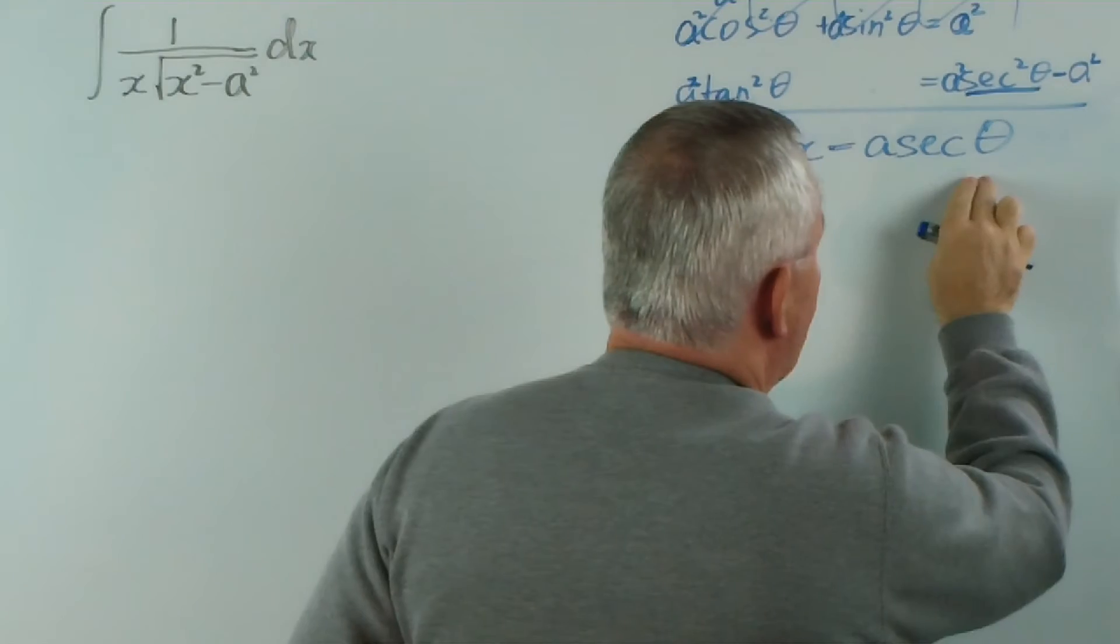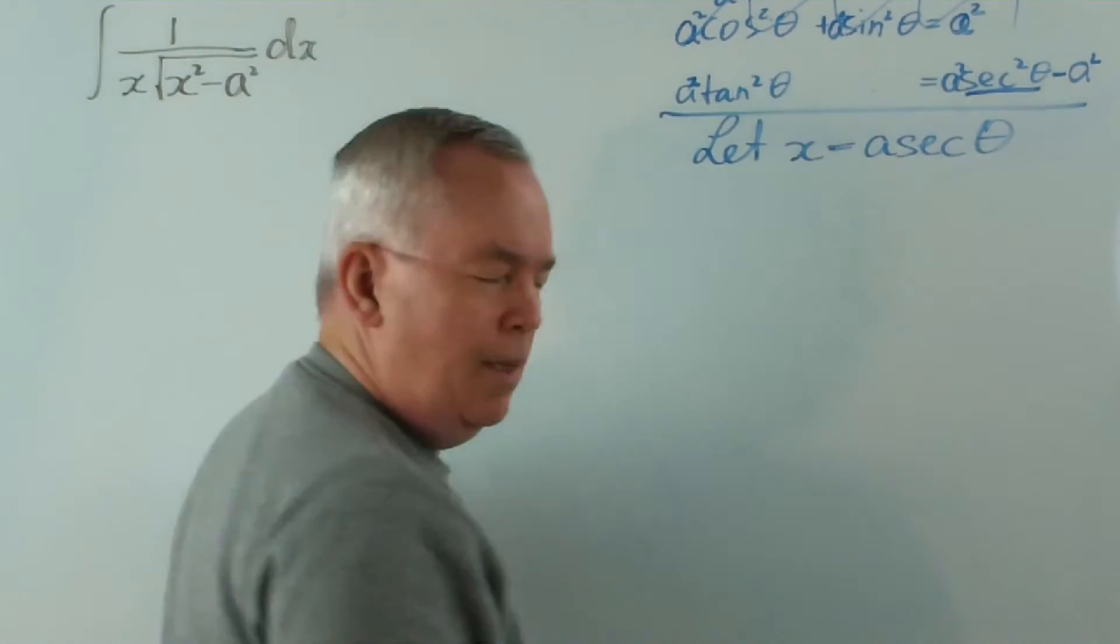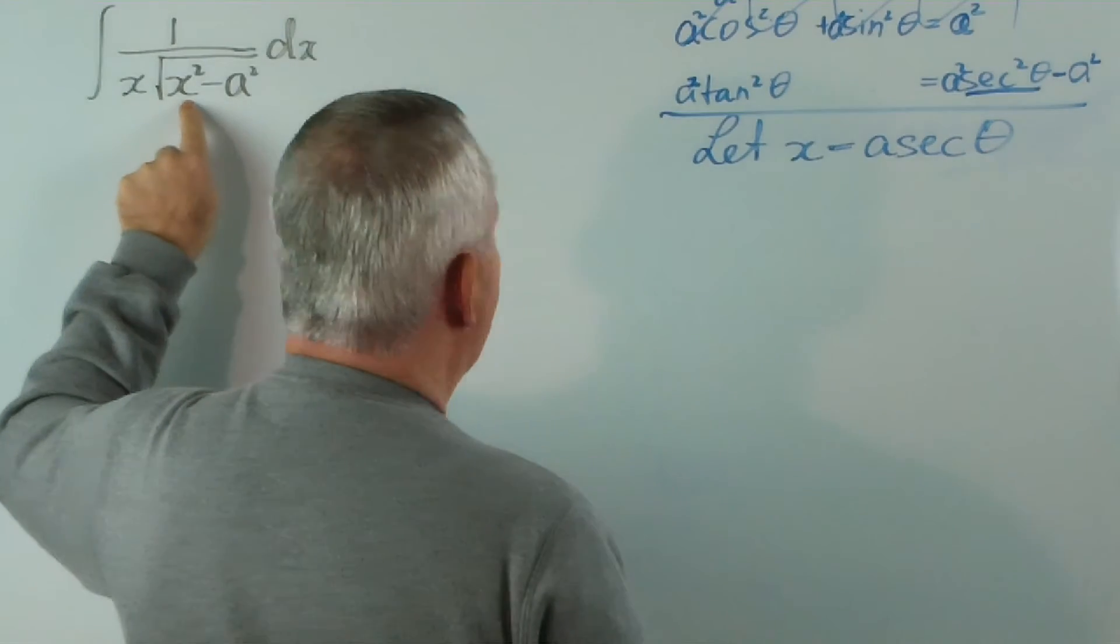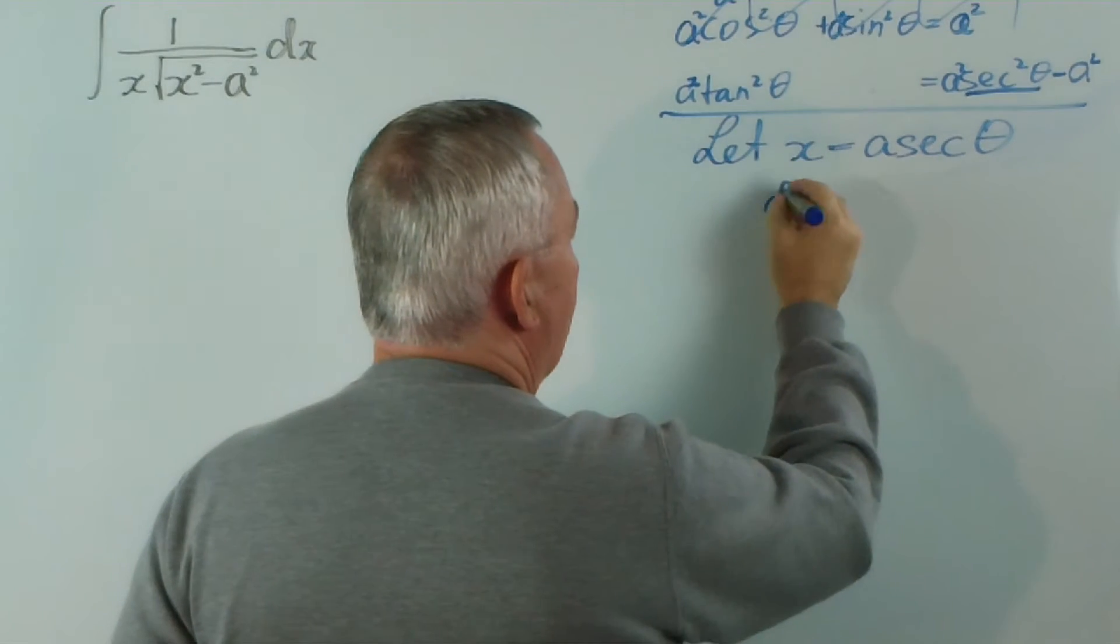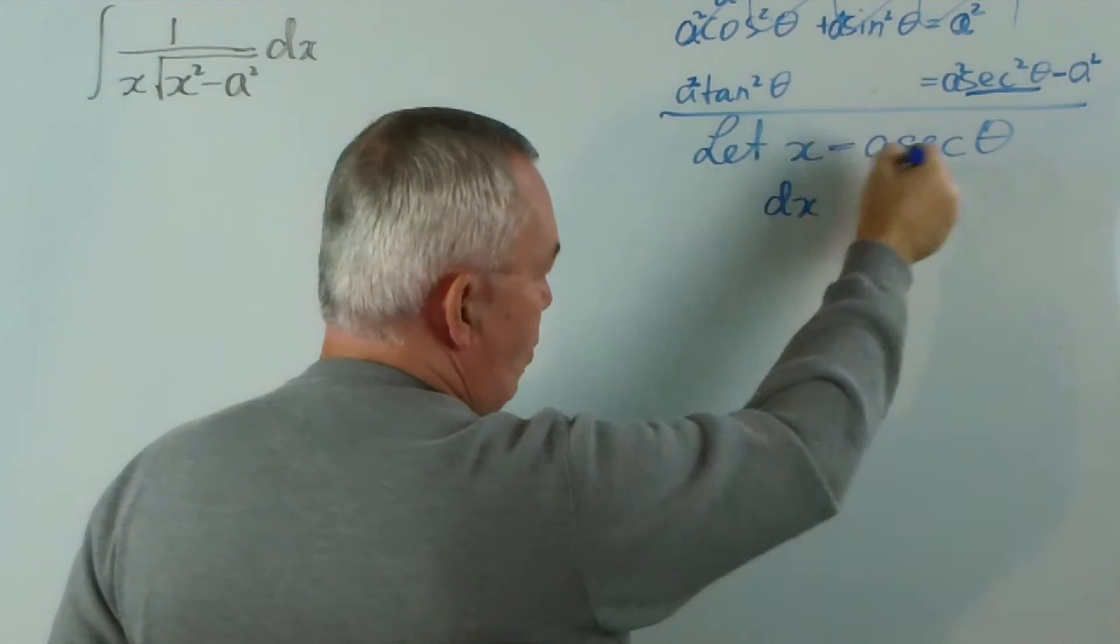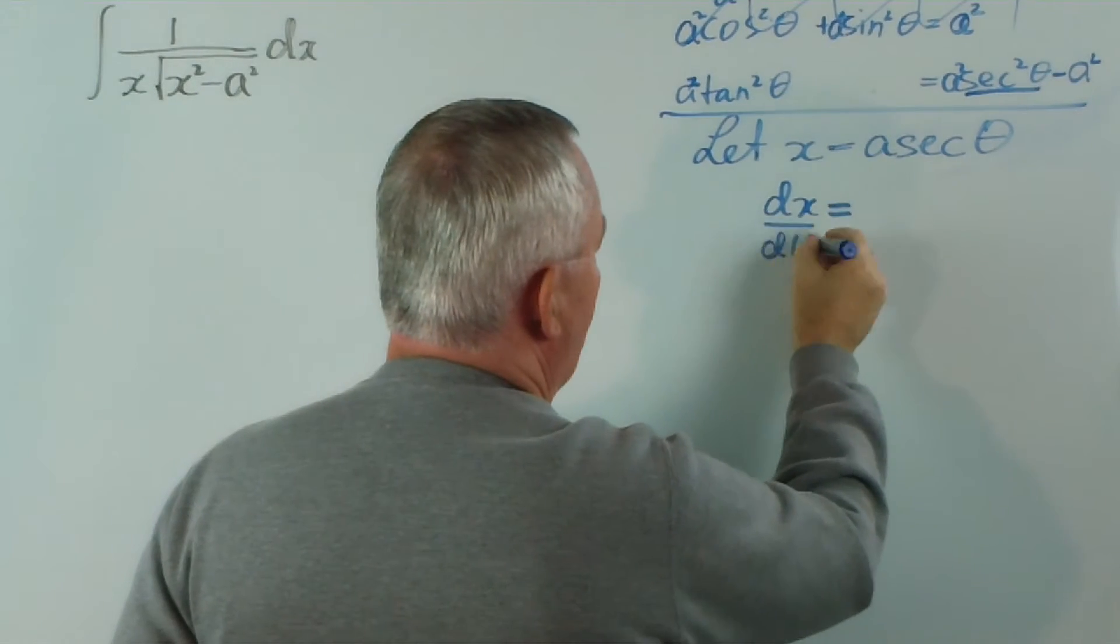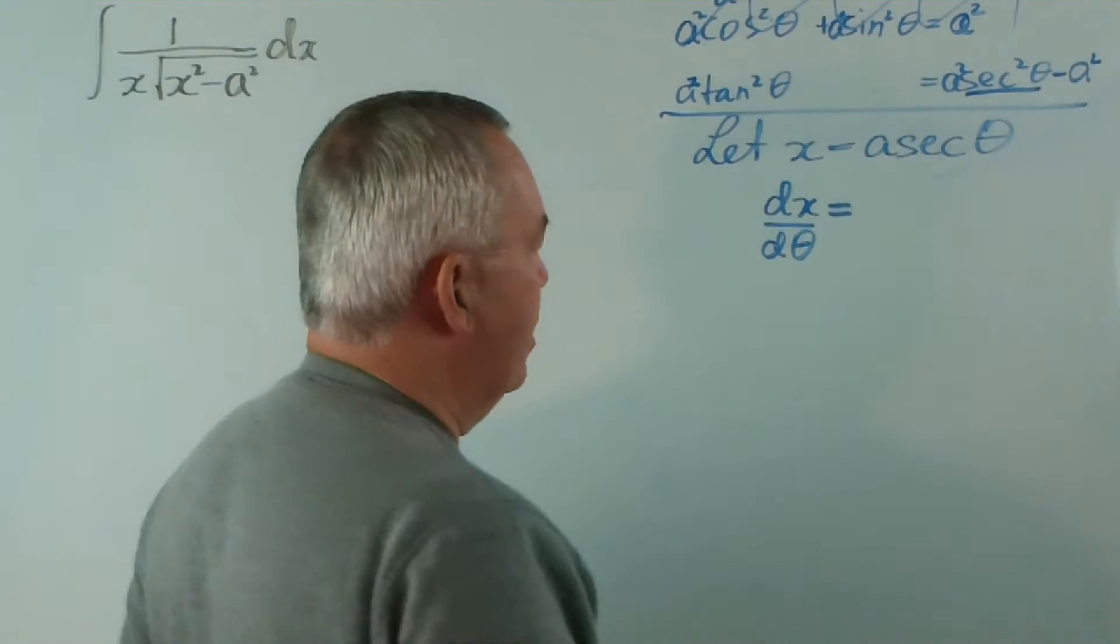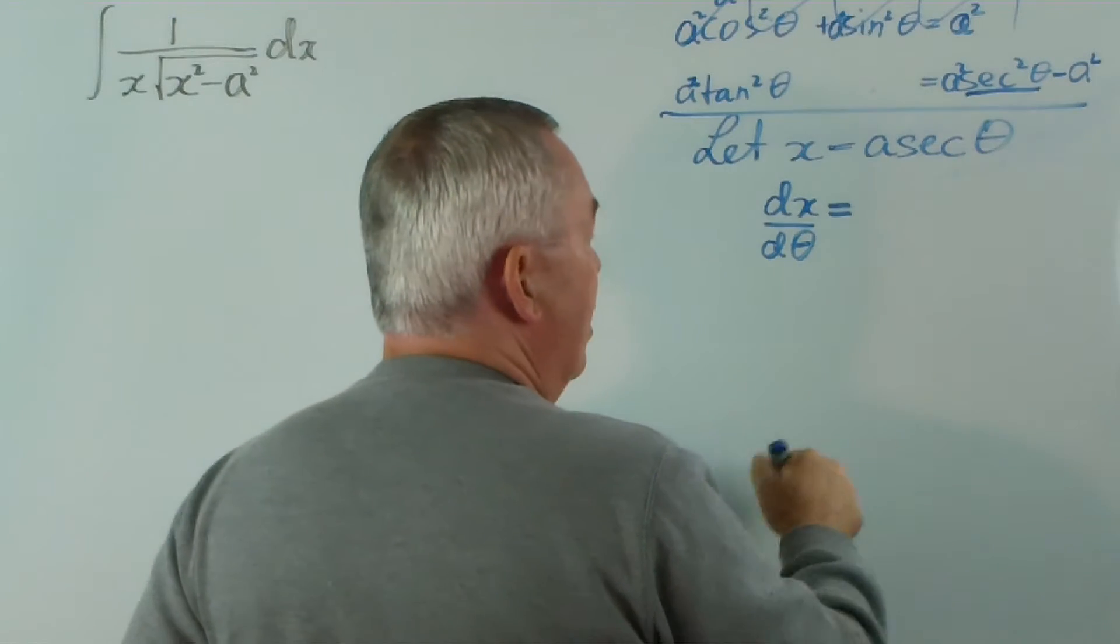Okay, we need to get down to it now. If we're making this substitution, then in place of this x we can write a sec theta. That's not a problem. In place of this x we can write it as well. But what do we do with the dx? Well, we need to work this out. So dx d theta would be something. I often just write the d theta on the other side straight away. What's the derivative of this?